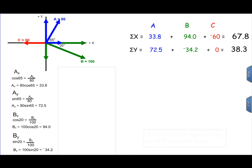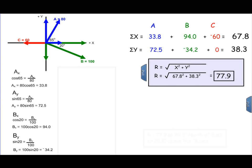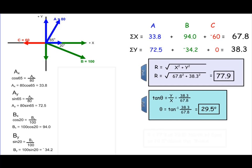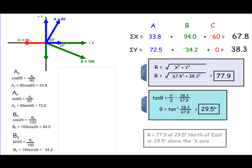Then go ahead and solve it just like we did on the earlier slide. Use the Pythagorean theorem to find the magnitude of the vector, and use the tangent function to find the angle at which it is directed. That gives you the same answer: the resultant is equal to 77.9 at 29.5 degrees north of east. It doesn't matter which approach you use — it depends on your comfort level with trigonometry. That's how to use algebra to find the resultant when three or more vectors are present.